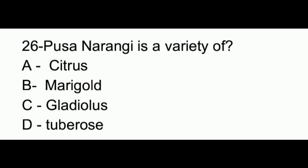Question number 26. Pusa Narangi is a variety of: option A, citrus; option B, marigold; option C, gladiolus; option D, tuberose. The answer to this question is option B, which is marigold.